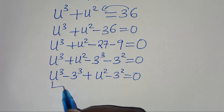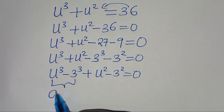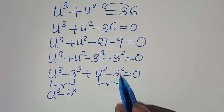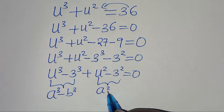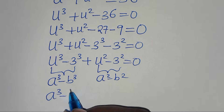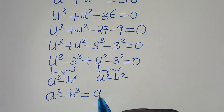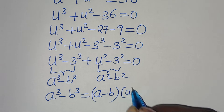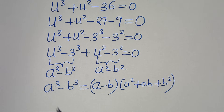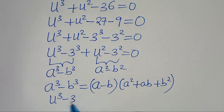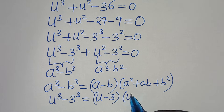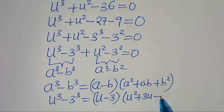We now have two parts. The first part is the difference of two cubes in the form a^3 minus b^3. Applying the identity, a^3 minus b^3 equals (a minus b)(a^2 plus ab plus b^2), we expand u^3 minus 3^3 as (u minus 3)(u^2 plus 3u plus 9).